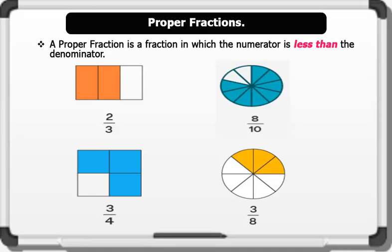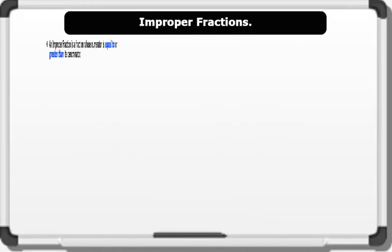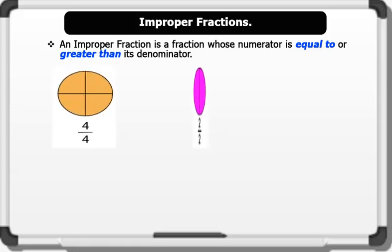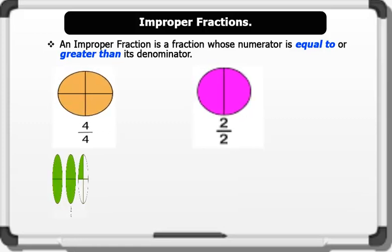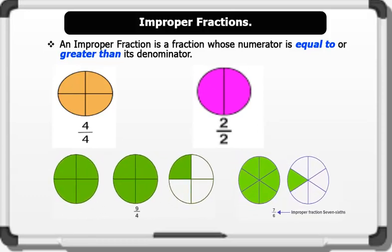Now let's see improper fractions. An improper fraction is a fraction whose numerator is equal to or greater than its denominator. Examples of improper fractions include: 4 over 4, 2 over 2, 9 over 4, and 7 over 6.